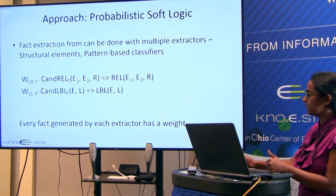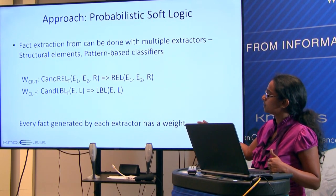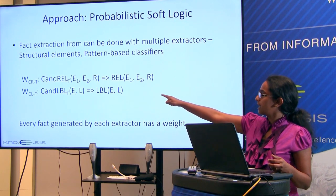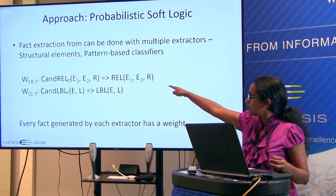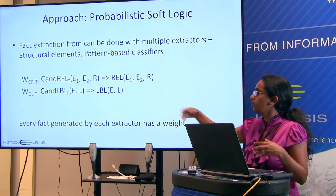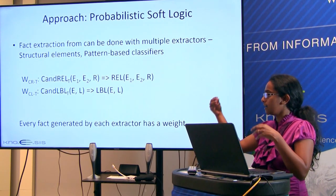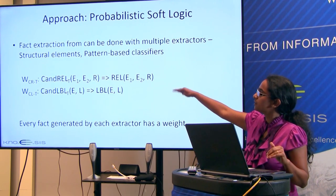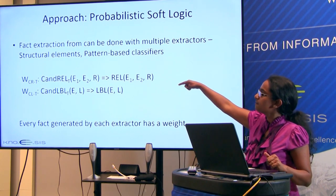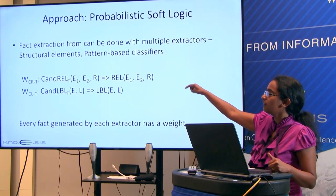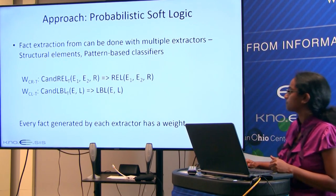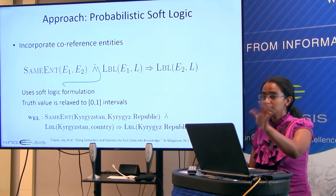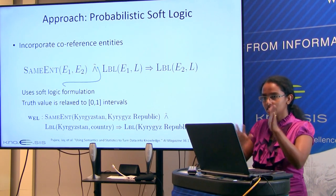Information extraction techniques extract facts from the entire web. For each candidate fact — for example, a relationship R connecting entities E1 and E2 — they represent this with a weight based on the confidence value that the fact extraction technique assigns.